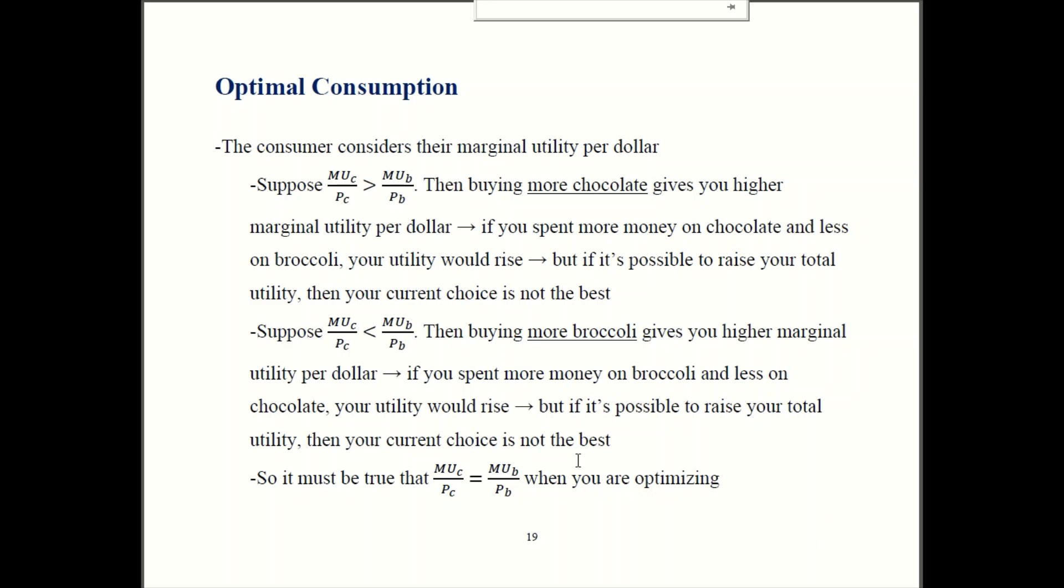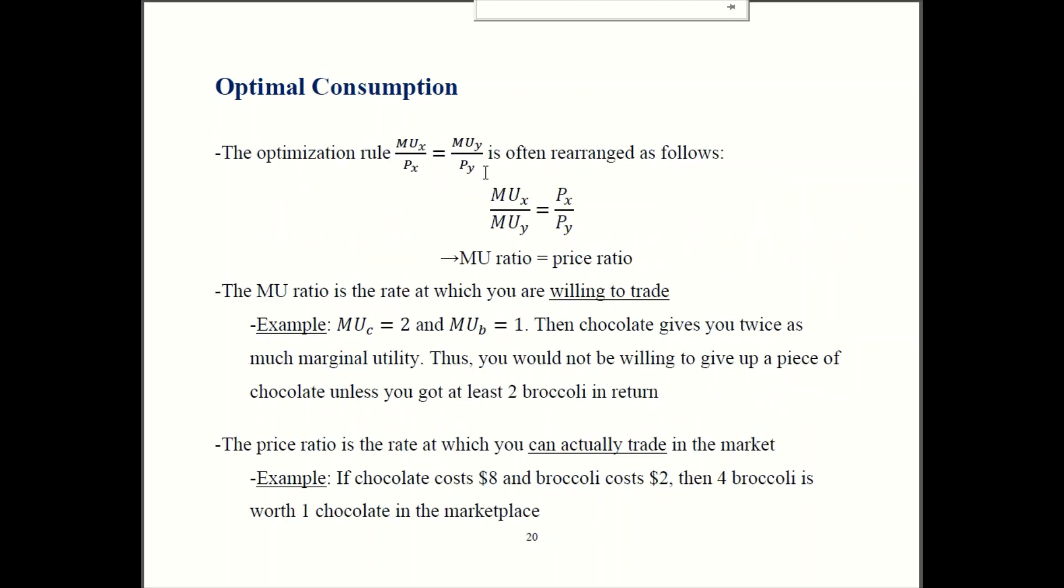So oftentimes, economic textbooks rewrite this formula in a different way. So you put all the marginal utilities on one side and the prices on the other, and you get this. The marginal utility ratio for X and Y has to equal the price ratio if you're making the best possible consumption choice. So there is intuition for that as well. So the MU ratio is the rate at which you're willing to trade the two goods. So the marginal utility of chocolate is 2 and the marginal utility of broccoli is 1. That means you're willing to trade two broccoli for one chocolate. So 2 broccoli would give you 2 times 1, which is 2 extra utils. 1 chocolate also gives you 2 extra utils. So 2 extra broccoli and 1 extra chocolate are the same to you. That's the rate you're willing to exchange 2 broccoli for 1 chocolate.